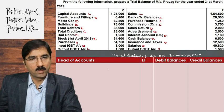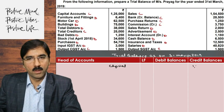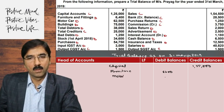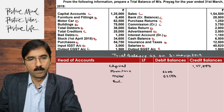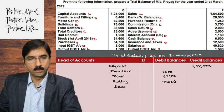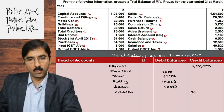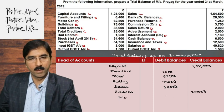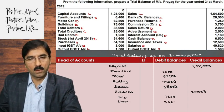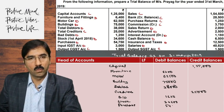Subse pahla: Capital 125,000 credit. Furniture 6,400 debit. Motor 62,500 debit. Building 75,000 debit. Debtor 38,000 debit. Creditor 25,000 credit. Bad debt 1,250 debit. Stock 34,600 debit. Purchases 54,750 debit.